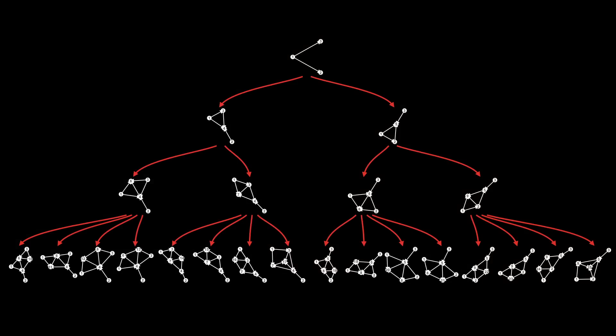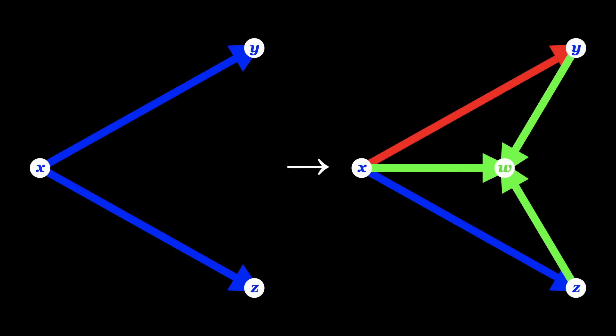Let's start with the multiway graph. This multiway graph shows every possible evolution of the universe over three computations. At each computation, we're applying the rule I've used many times before — the one where you find two edges from the same node, delete one of those edges, and create a new edge from each of the three nodes to a new node.